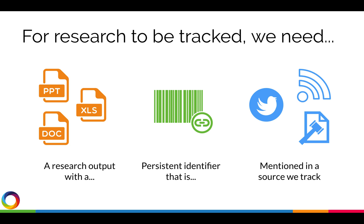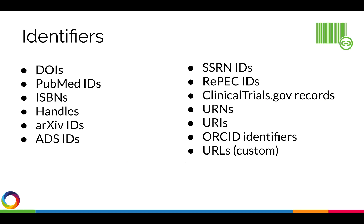For research to be tracked, we need a research output with a persistent identifier that is mentioned in a source we track. For example, if we plan on sharing a journal article on Twitter, we have requirements one and three covered. The output we want to share is a journal article, and we are sharing it on Twitter, which is a source that Altmetric tracks. It is the second requirement, the persistent identifier, that is sometimes the culprit when people report missed mentions.